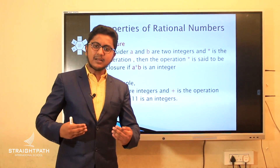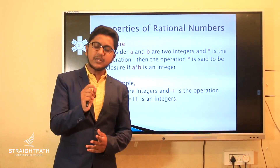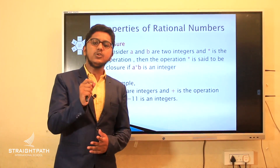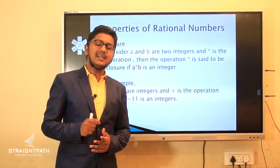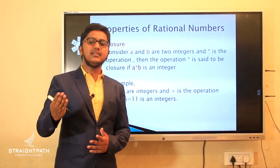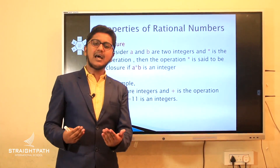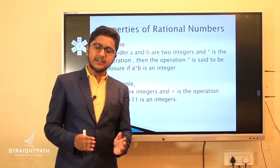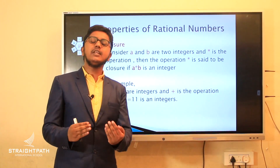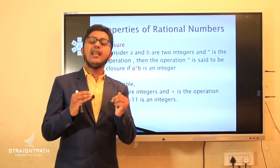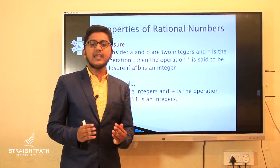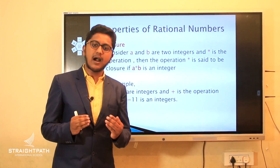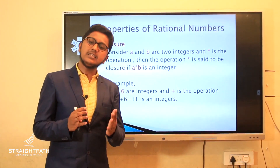For multiplication, a by b into c by d is again a rational number. For example, 2 by 3 multiplied by 5 by 7 will definitely give another rational number. So we can conclude that closure property is satisfied under multiplication.